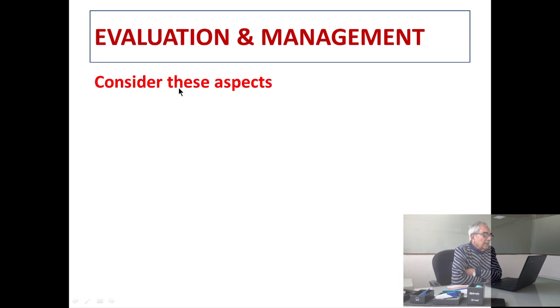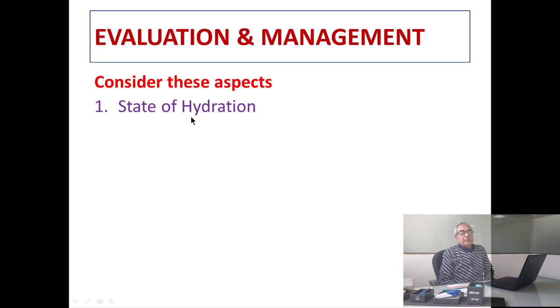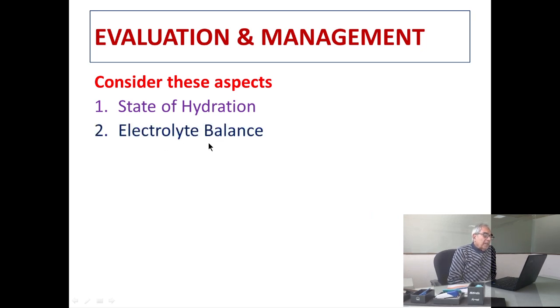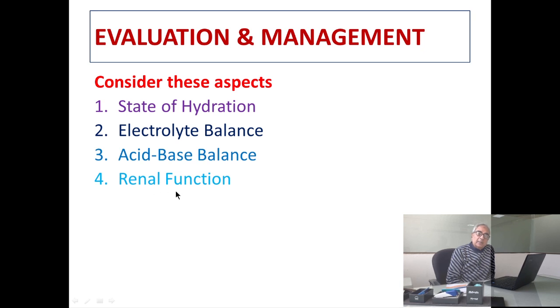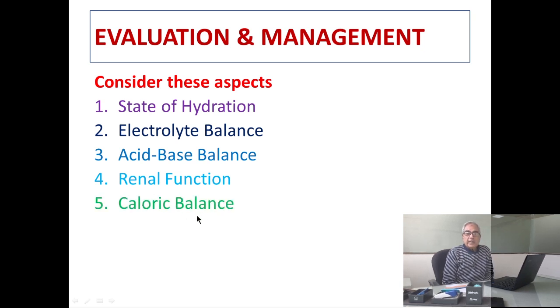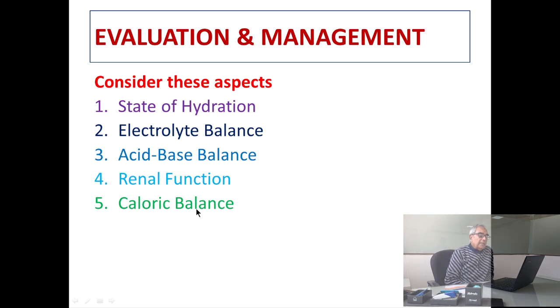When a patient comes to us and we want to evaluate and manage such animals, we have to consider the five pillars of diagnosis of fluid abnormalities. First, we have to see the present state of hydration, then the electrolyte balance, then the acid-base abnormalities, then the renal and liver function, and finally the caloric balance — what is the caloric state in that animal at the time of examination.